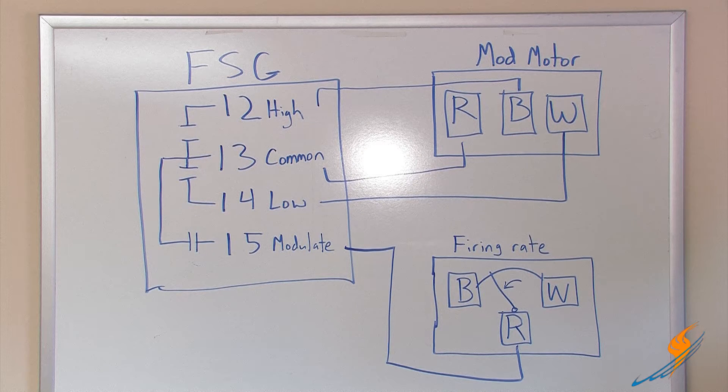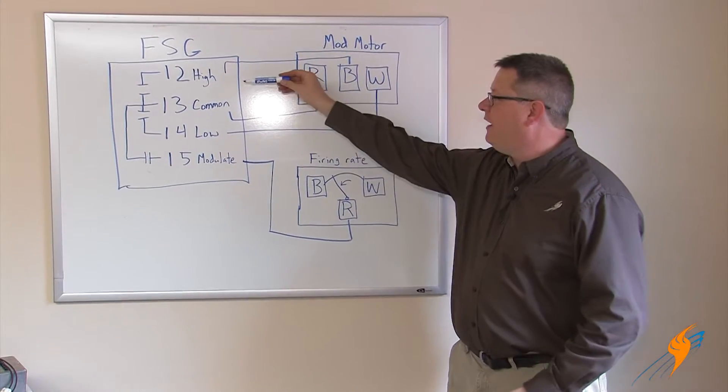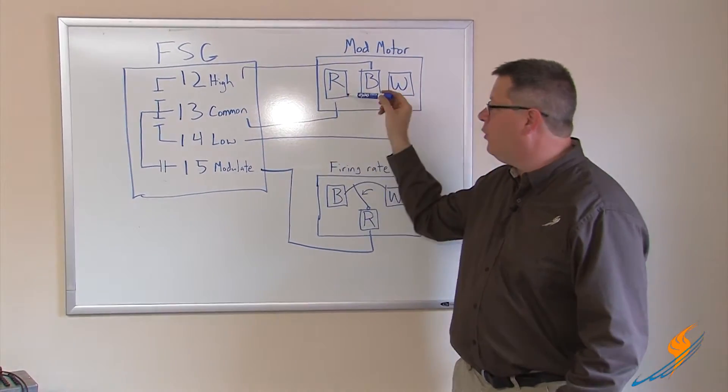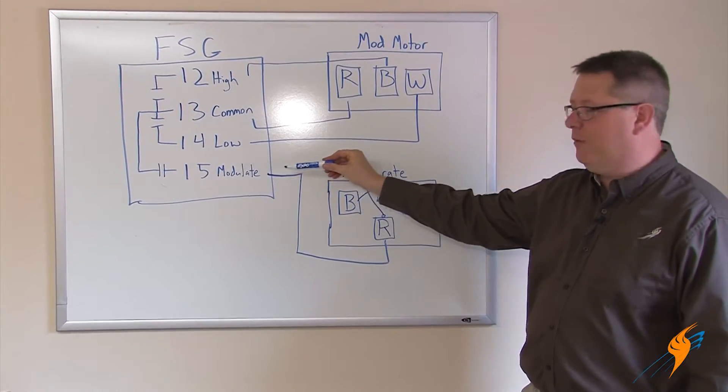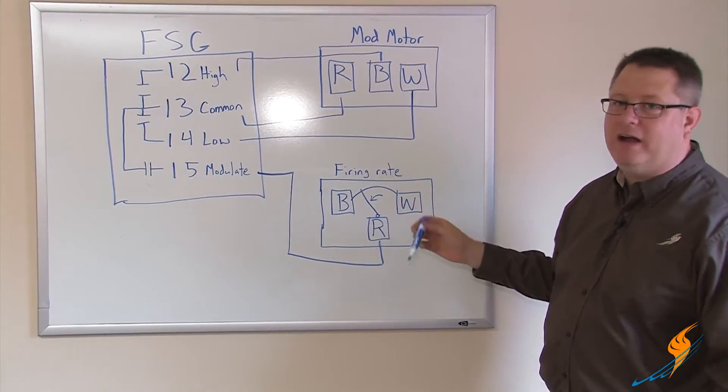Once we've lit the burner and we release the burner to modulate, the flame safeguard control jumps the common or R terminal to its modulate output terminal. That goes to our firing rate control.